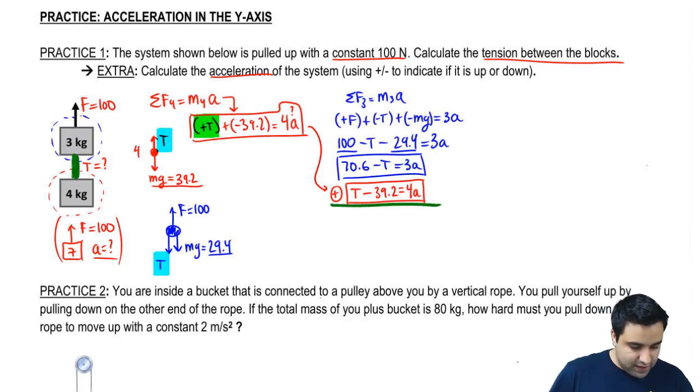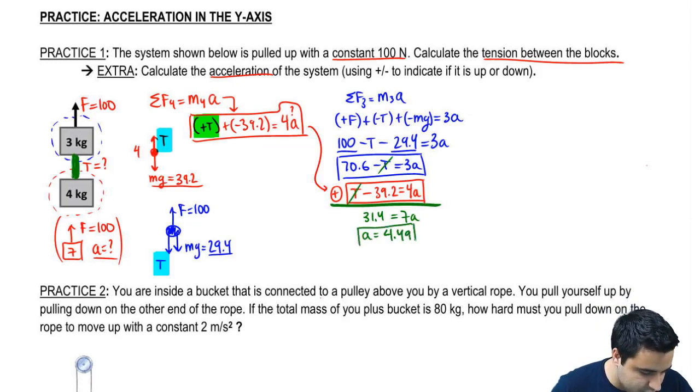And if I add these equations, you add everything on the left, so the T's cancel. And I have 70 minus 39.2, which is 31.4. And on the right side, I have 7A. So A is 31.4 divided by 7, which rounds out to 4.49 meters per second squared.